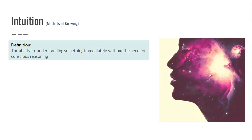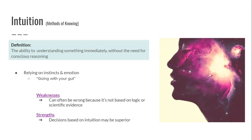Starting with intuition: intuition is the ability to understand something immediately without the need for conscious reasoning. We are using our instincts and emotion to know something. Intuition is often referred to as trusting your gut, because people associate it with an actual physical feeling or state. When someone uses intuition, they just know it — it comes naturally, with very little conscious thought or logic, regardless of whether they have any history or experience with that specific thing.